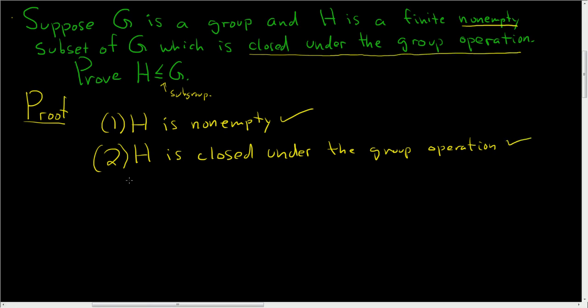The last thing we have to show is that H is closed under inverses. So suppose we have an element X in H. And we want to show that the inverse of X also lies in H. So the only thing we haven't used is the fact that H is finite. So we somehow have to use the fact that H is finite to show that X inverse also lives inside H. So note, X squared, X cubed, X to the fourth, et cetera, are all in H, right? Because H is closed under the group operation.